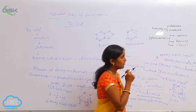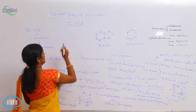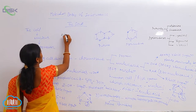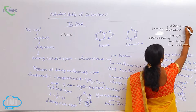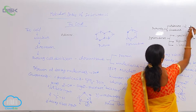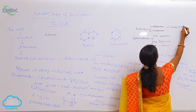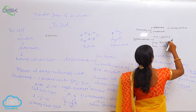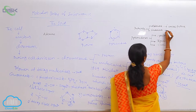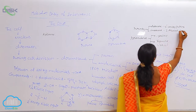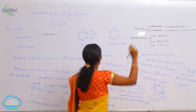When you come to the basic skeleton of adenine — how it is made — adenine is nothing but 6-aminopurine. Whereas when you come to guanine, that is 2-amino-6-oxypurine. How it is derived, I can show you here.